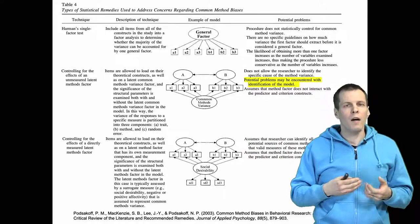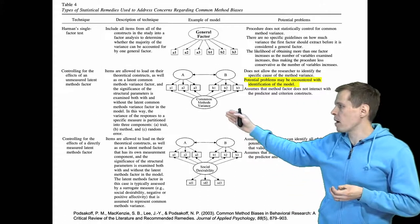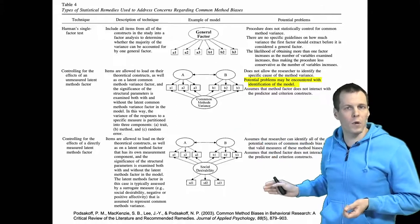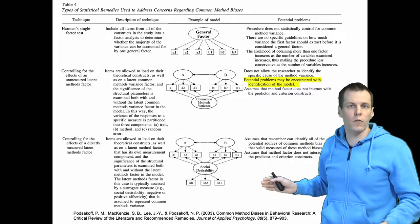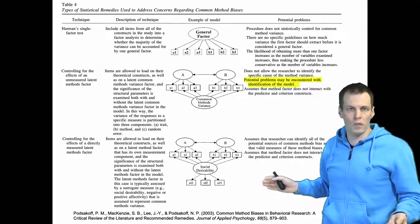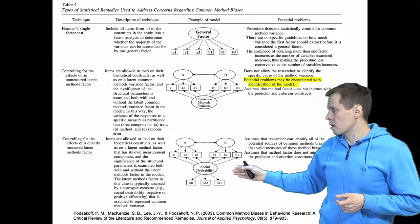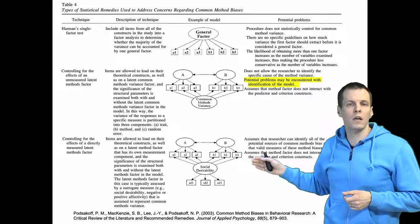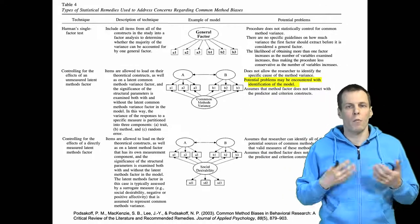We can have two versions of this model: one with method variance that is not measured, and another where the source of method variance is measured — for example, social desirability would be measured and modeled as a cause of variation in the items. Or we can have a third option where we have marker indicators.